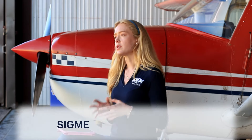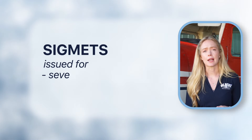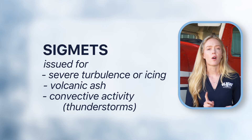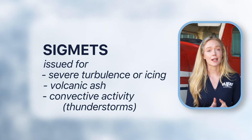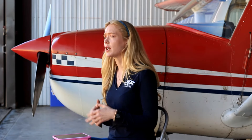You will also be asked about SIGMETs on your checkride. SIGMETs are issued for severe conditions that affect all aircraft. They're typically valid for four hours and are issued for conditions like severe turbulence, volcanic ash, severe icing, and convective activity. Understanding these advisories is not just about knowing what they mean, but just like the surface analysis chart, how are you going to make decisions based off of the presence of these advisories?